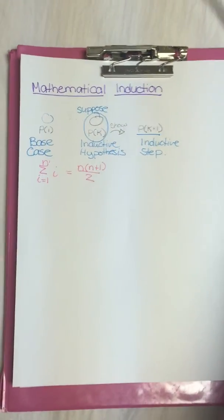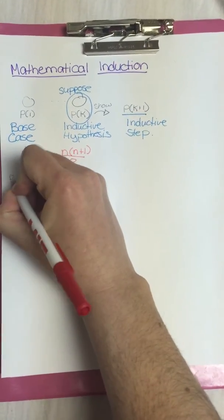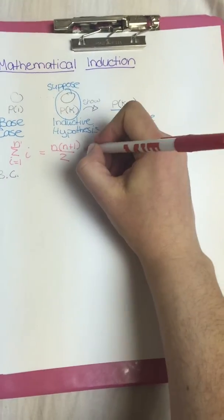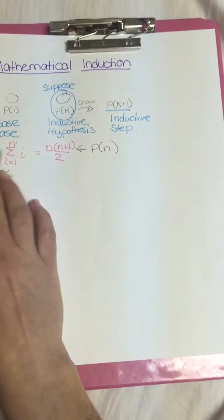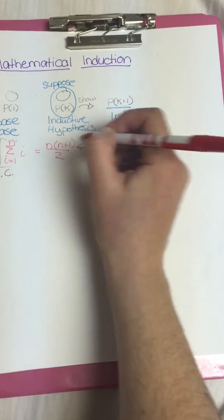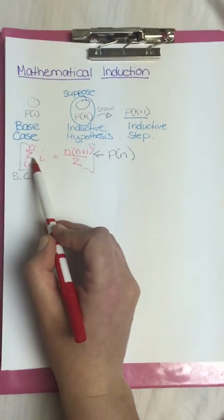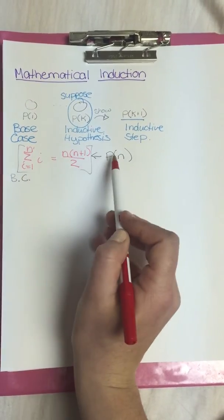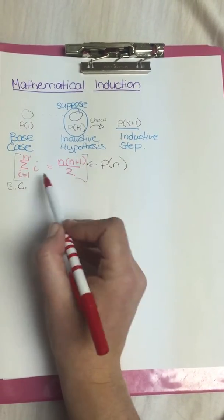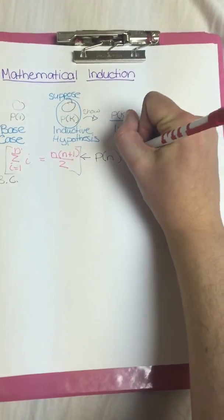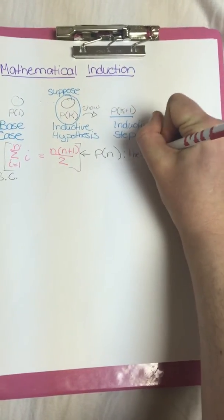So to start this, we're going to do the base case. This is our statement P of n. Basically P is this entire statement — not just one half, but the whole thing. The entire idea that one side is equal to the other side is this statement P. P isn't just one half or the other half. P is that the sides are equal.